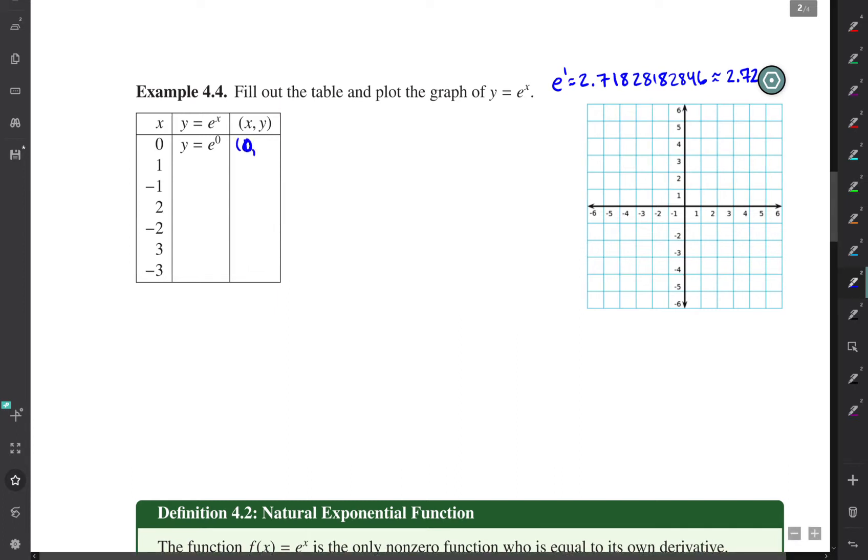if you plug in zero, you're going to get e to the zero, which is one, so it goes through (0,1). It's going to go through (1,e), which is right there - one comma e, or 2.72.